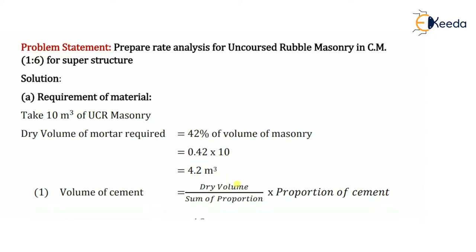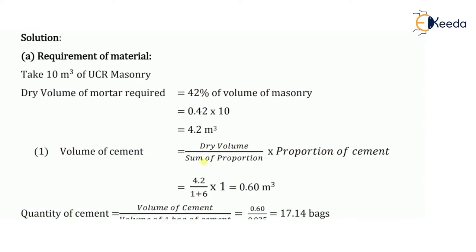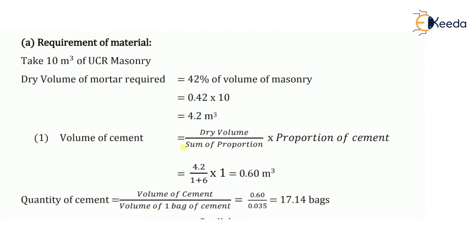Now let's calculate the volume of cement. The formula for volume of cement is dry volume divided by the sum of proportion, into the proportion of cement. Dry volume is 4.20 meter cube, divided by the sum of proportion which is 1 plus 6, since the proportion is 1:6. The proportion of cement is 1, meaning 1 part cement and 6 parts sand. So the volume of cement comes as 0.60 meter cube.